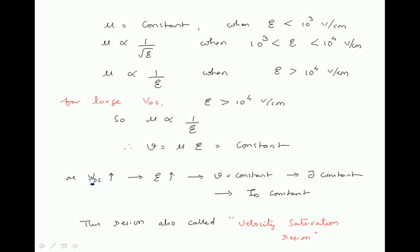For large VDS, even as VDS increases, electric field increases as usual. But velocity becomes constant — the velocity of charge carriers becomes saturated. Whenever velocity is constant, current density is constant, and therefore drain current becomes constant. Even as VDS increases, drain current remains constant. This is because the velocity of charge carriers becomes saturated, which is why this region is also called the velocity saturation region.